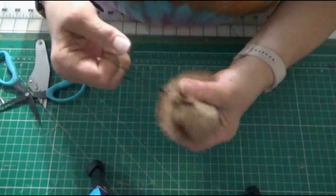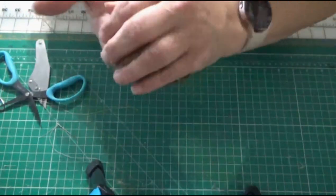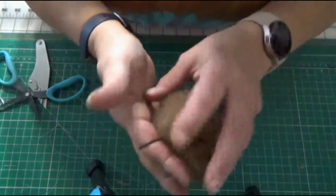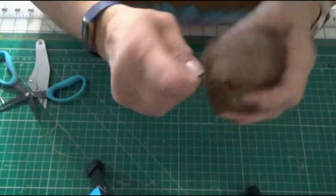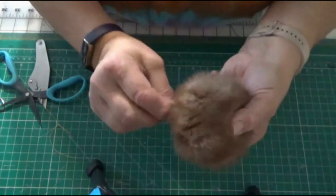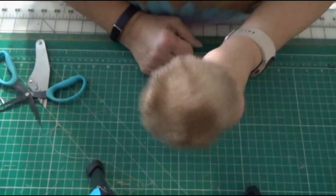So there it is. So what they are going to do is they are going to use this pom pom on a hat. They are going to knit the hat, and then this part will pull through the top of the hat and get secured on the inside. And this will stay on the top.